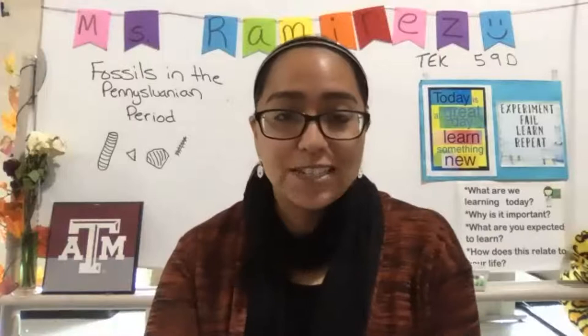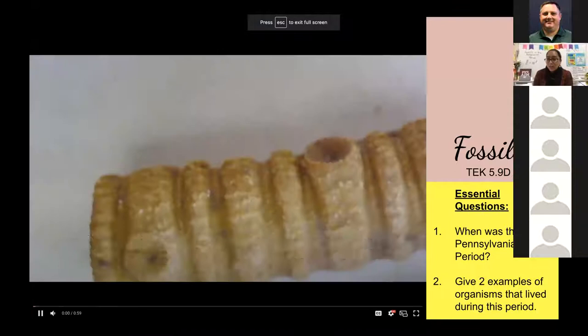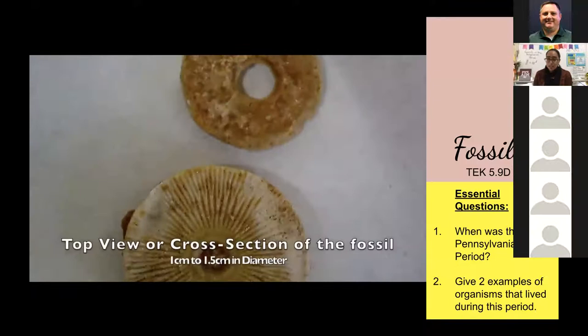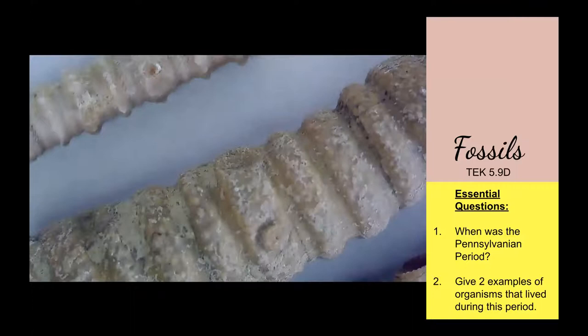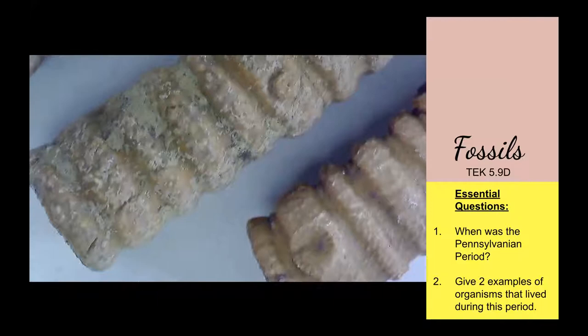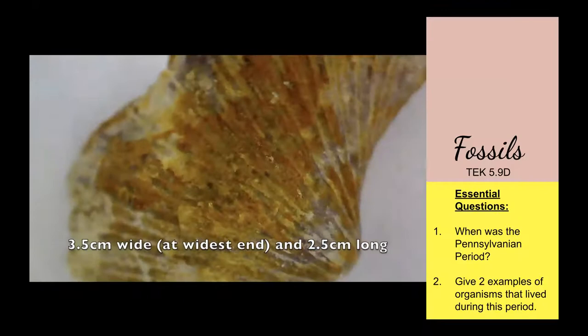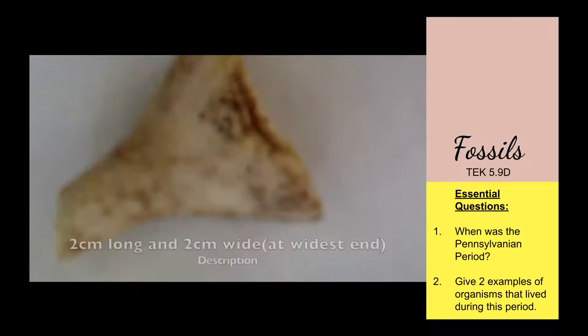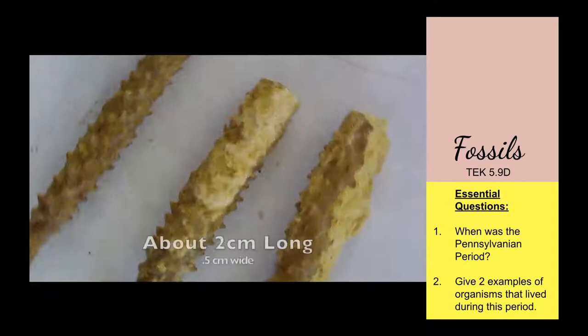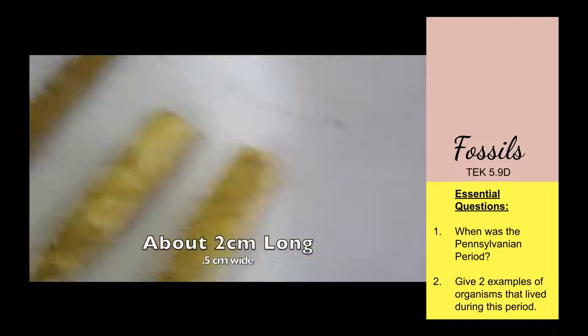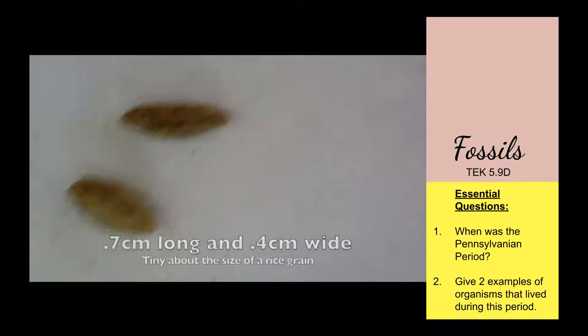Hello, my name is Ms. Ramirez, and in this segment we're going to go further back in time and learn about the Pennsylvanian period. I have two essential questions for you. By the end of this presentation, you should be able to answer: when was the Pennsylvanian period? And you should be able to give two examples of organisms that lived during this period. Fossils are preserved evidence of past living organisms and can provide evidence about the environment at that time — Earth's surface is constantly changing, and fossils help us understand Earth's history.